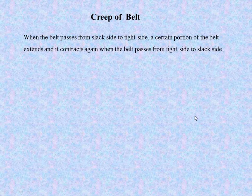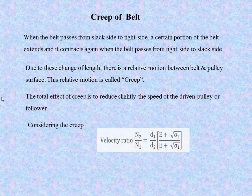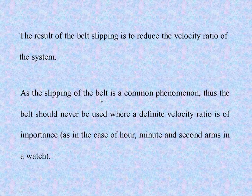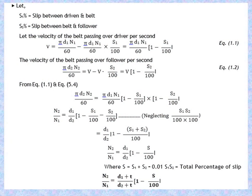Since slipping of the belt is a common phenomenon, the belt should never be used where a definite velocity ratio is of importance — for example, in clock mechanisms with hour, minute, and second arms, where timing is critical. Let S1 be the percentage slip between the driver and shaft, and S2 be the slip between the belt and follower.